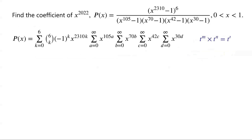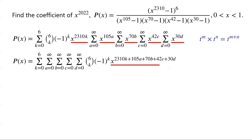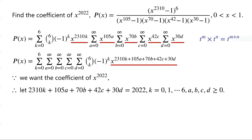By the product of powers rule, T to the power of M times T to the power of N equals T to the power of M plus N. So X to the power of 2310K times X to the power of 105A times X to the power of 70B times X to the power of 42C times X to the power of 30D equals X to the power of 2310K plus 105A plus 70B plus 42C plus 30D. To find the coefficient of X to the power of 2022 in P of X, we set the exponent 2310K plus 105A plus 70B plus 42C plus 30D equal to 2022.